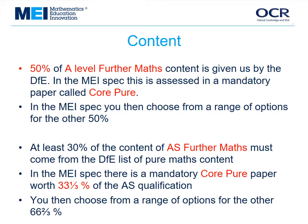In the MEI spec, this mandatory content is assessed in one core-pure paper. This leaves 50% for options. Some of that core-pure content has to be mandatory in the AS level, and MEI has chosen to have one compulsory AS core-pure paper, worth one-third of the AS level.